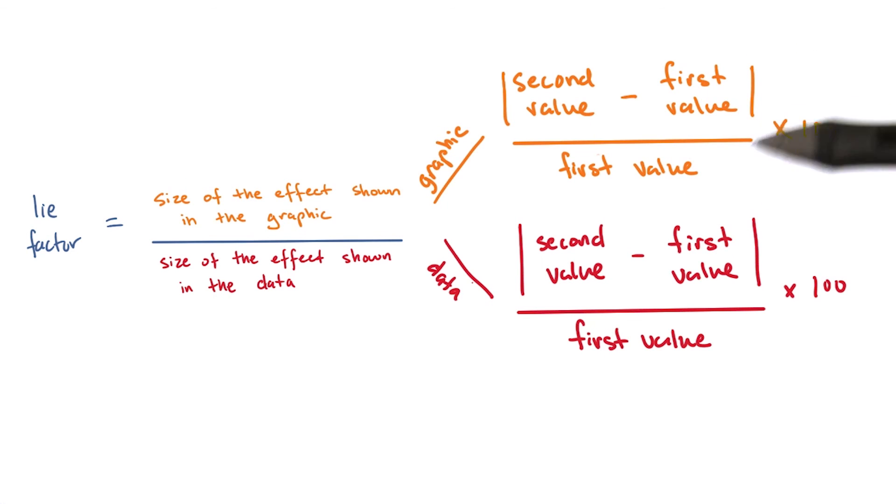We apply this method to both the graphic and the data, and then divide this entire quantity to get our overall lie factor.